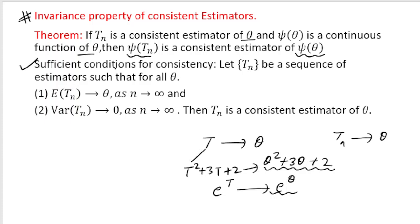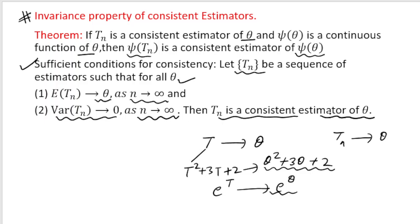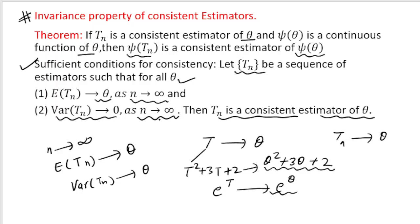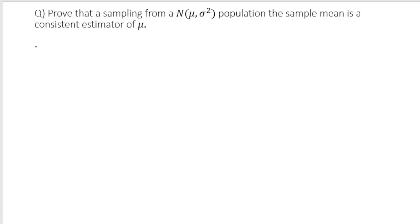Another important result is the sufficient condition for consistency: let Tn be a sequence of estimators such that for all theta, if expectation of Tn tends to theta as n tends to infinity and variance of Tn tends to 0 as n tends to infinity, then Tn is a consistent estimator of theta. As n tends to infinity, we look at the behavior of expectation of Tn — it should approach theta — and variance of Tn should approach 0 based on a large sample. If you take a large sampling distribution from the given population, this characteristic should be satisfied.